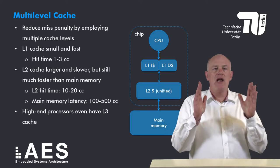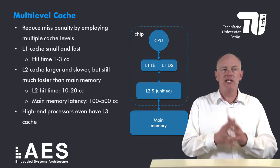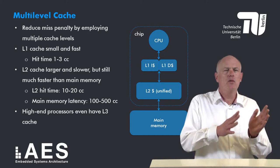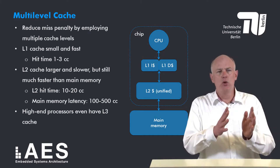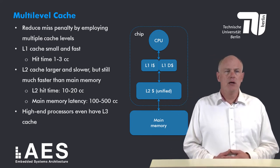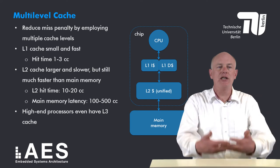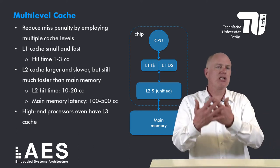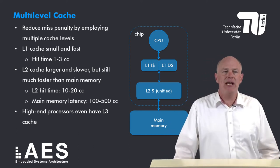The level one cache should be small and fast enough to have a hit time of preferably one, sometimes two up to three clock cycles. The level two cache can then be much larger and also slower, but it is still much faster than main memory.